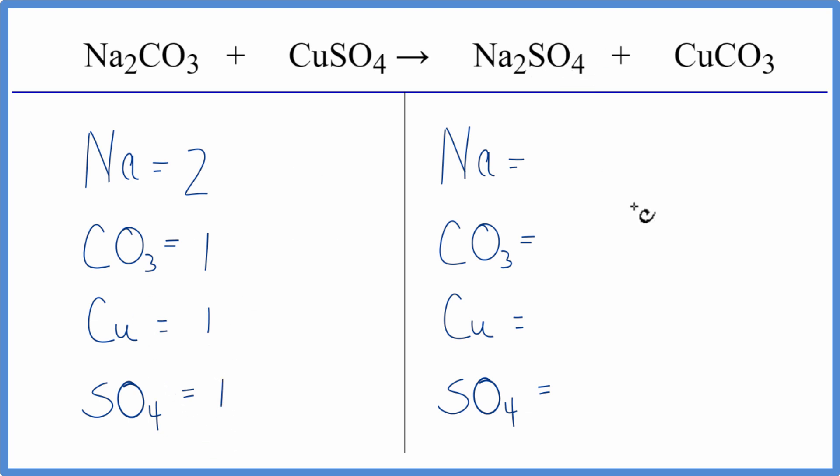On the product side, we have two sodiums, one carbonate, one copper, and then one sulfate. So you can see by counting these polyatomic ions, it's just one thing if they appear on both sides. That's a very effective strategy when balancing double displacement reactions.